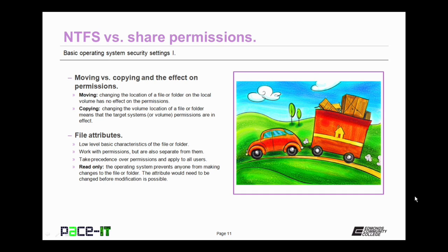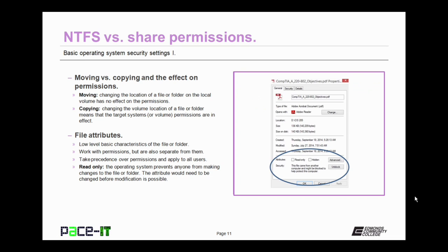Now we need to discuss file and folder attributes. These are very low-level and basic characteristics of the file or folder. They kind of work with permissions, but are also separate from them. File attributes always take precedence over permissions, whether they are NTFS or share, and file attributes apply to all users. An example of a file attribute is read only — the operating system will prevent anyone from making changes to the file or folder. The attribute would need to be changed before modifications were possible.